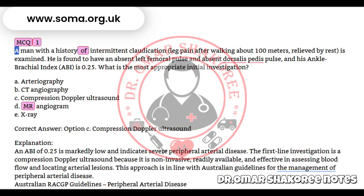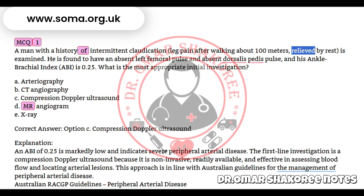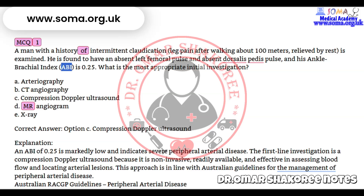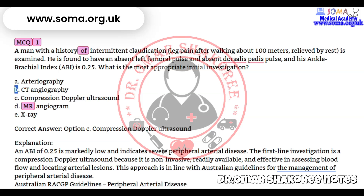Question 1: A man with a history of intermittent claudication — leg pain after walking about 100 meters, relieved by rest — is examined. He is found to have an absent left femoral pulse and absent dorsalis pedis pulse, and his ankle brachial index (ABI) is 0.25. What is the most appropriate initial investigation? A) Arteriography, B) CT angiography, C) Compression Doppler ultrasound, D) Magnetic resonance angiogram, E) X-ray.